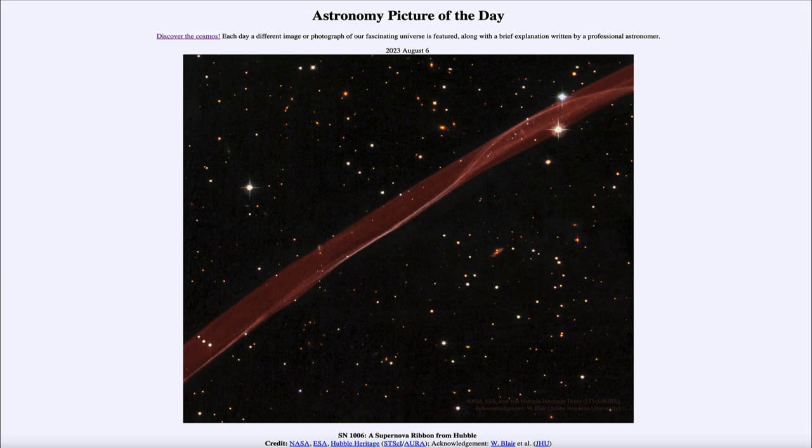That is apod.nasa.gov/apod, and today's picture for August 6th of 2023 is titled SN1006, a supernova ribbon from Hubble. What do we see here? We see a ribbon of material expanding out through space, with brighter areas and slightly fainter areas within. This is actually part of a supernova that occurred over a thousand years ago, one small part of that remnant expanding out into space.